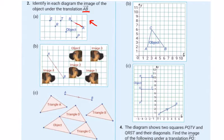So A to B is across two and up one. The object across two and up one is going to get the R.